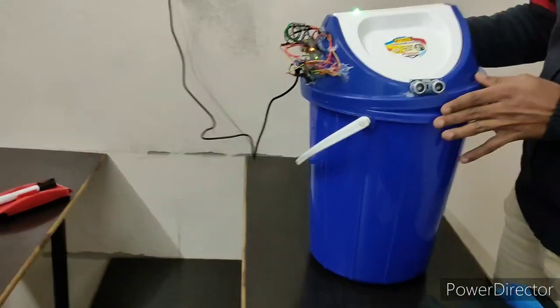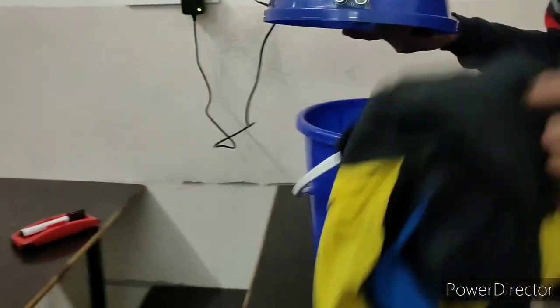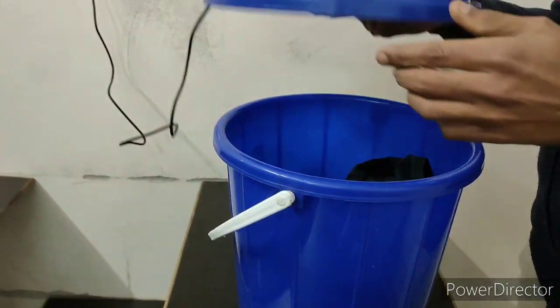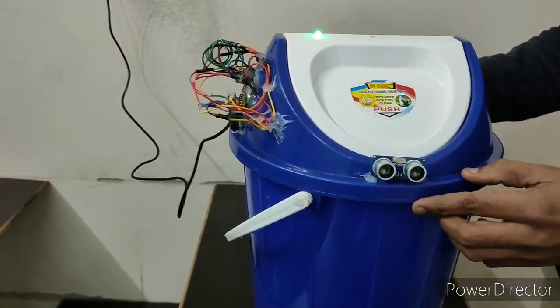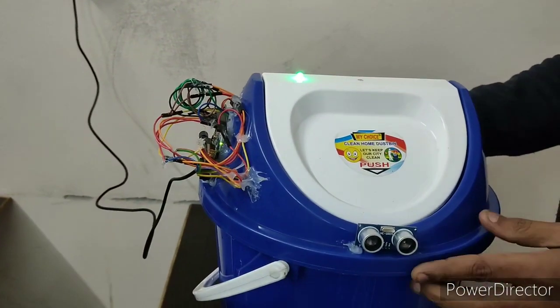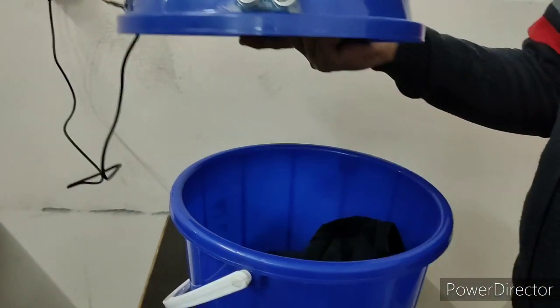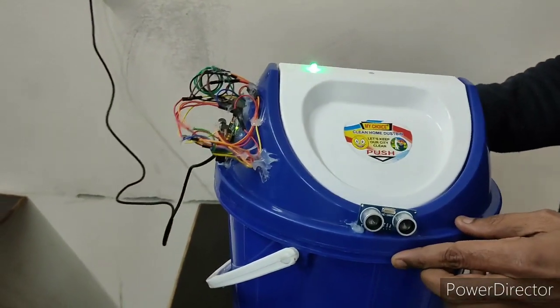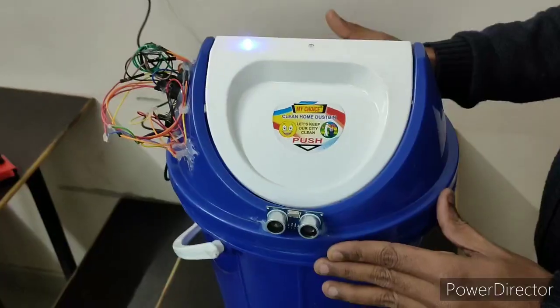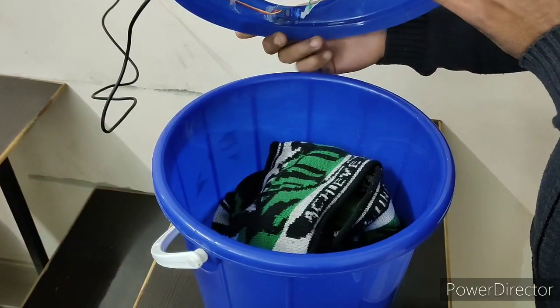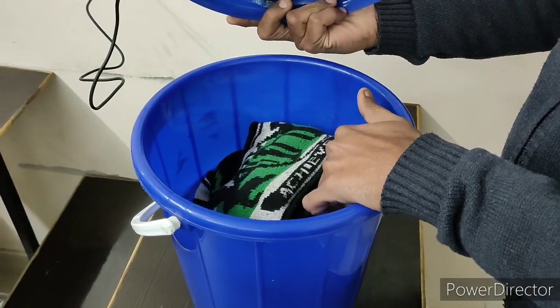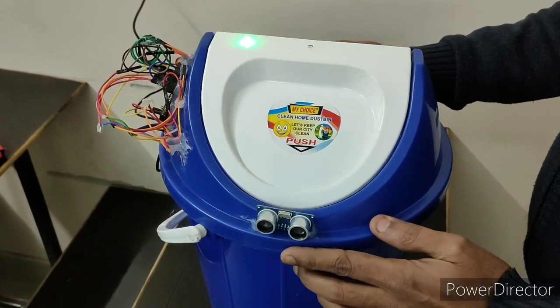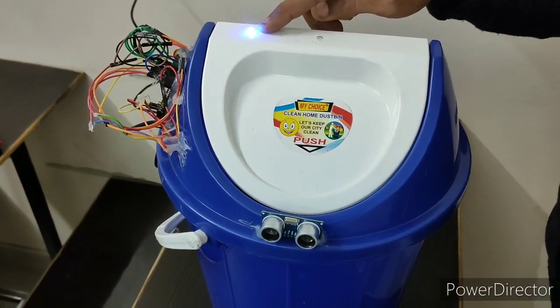So now I'll be showing you different levels which we have fixed to show garbage level. I am putting my jacket as a dummy garbage to show you that the dustbin is half filled. Initially, it is showing green light to show you that the dustbin is empty, but now when I put some dummy garbage, it will be indicating as half filled by blue color. So you can see it here that it is showing by blue light.